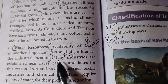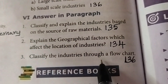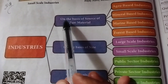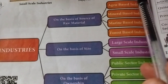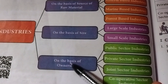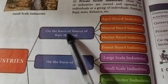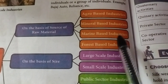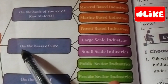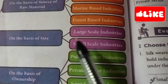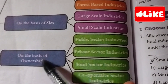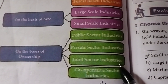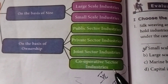Third — classify the industries through a flow chart. Page 136. Industries are classified on the basis of: source of raw material — agro-based, mineral-based, marine-based, forest-based industries; size — large scale and small scale industries; ownership — public sector, private sector, joint sector, and cooperative sector industries.